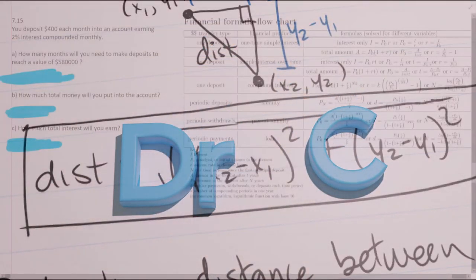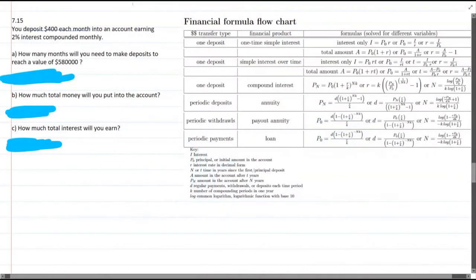So this example, we're going to deposit $400 each month. That right away is a monthly deposit, so it's periodic deposits.